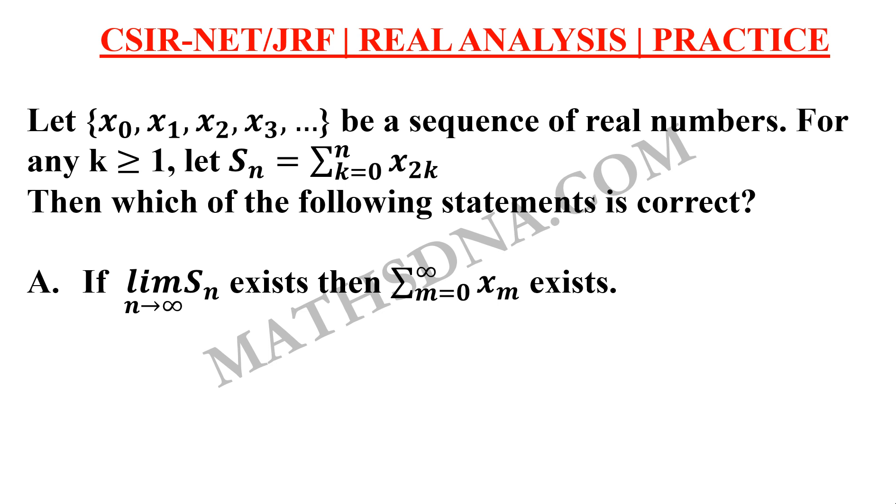Option a. If limit n tends to infinity Sn exists then summation m running from 0 to infinity xm also exists. Option b. If limit n tends to infinity Sn exists then summation m running from 0 to infinity xm need not exists.